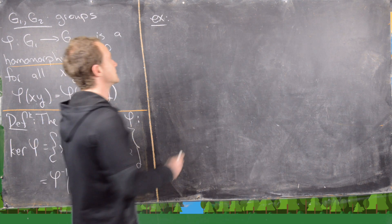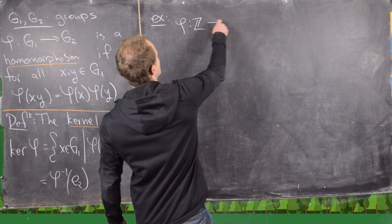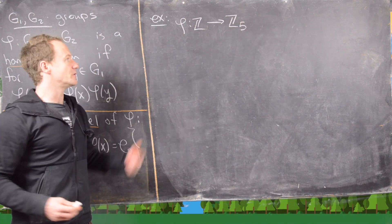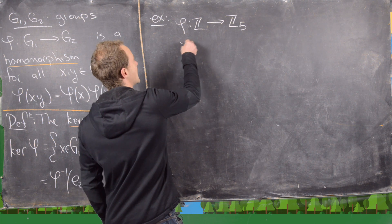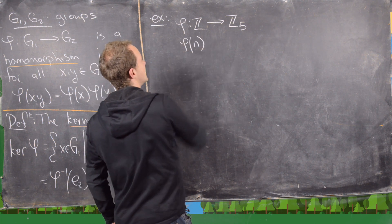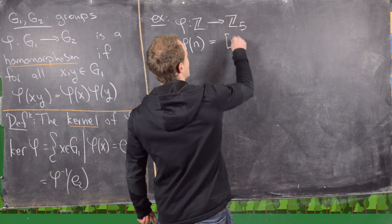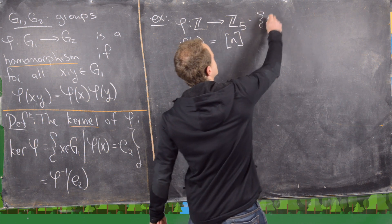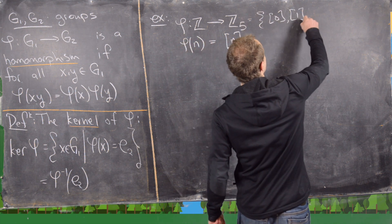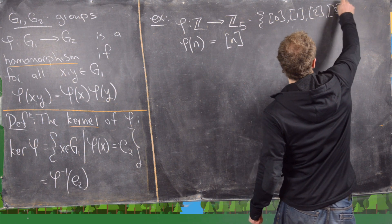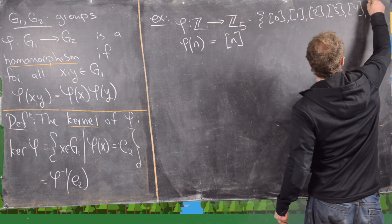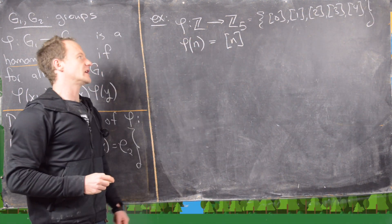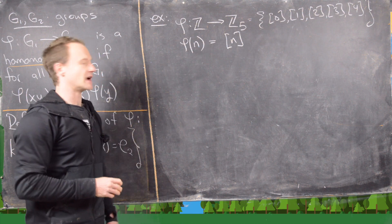Let's look at some examples. First, let's look at the example phi from Z to Z5. We define the map that takes the integer n to its equivalence class in Z5. Recall that Z5 is made up of five equivalence classes: 0, 1, 2, 3, and 4, where you get those by taking the remainder after dividing by 5.